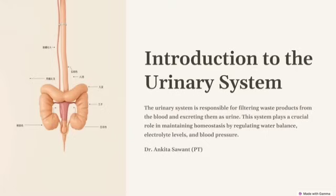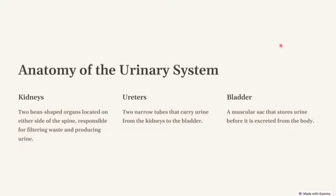What is the urinary system? The urinary system, also known as the renal system, consists of kidneys, ureters, bladder, and urethra. Its primary functions are to filter the blood, remove waste, and regulate fluid and electrolyte balance. The kidneys are often referred to as the body's natural filters, responsible for filtering waste products from the blood and excreting them as urine. This system plays a crucial role in maintaining homeostasis by regulating water balance, electrolyte levels, and blood pressure.